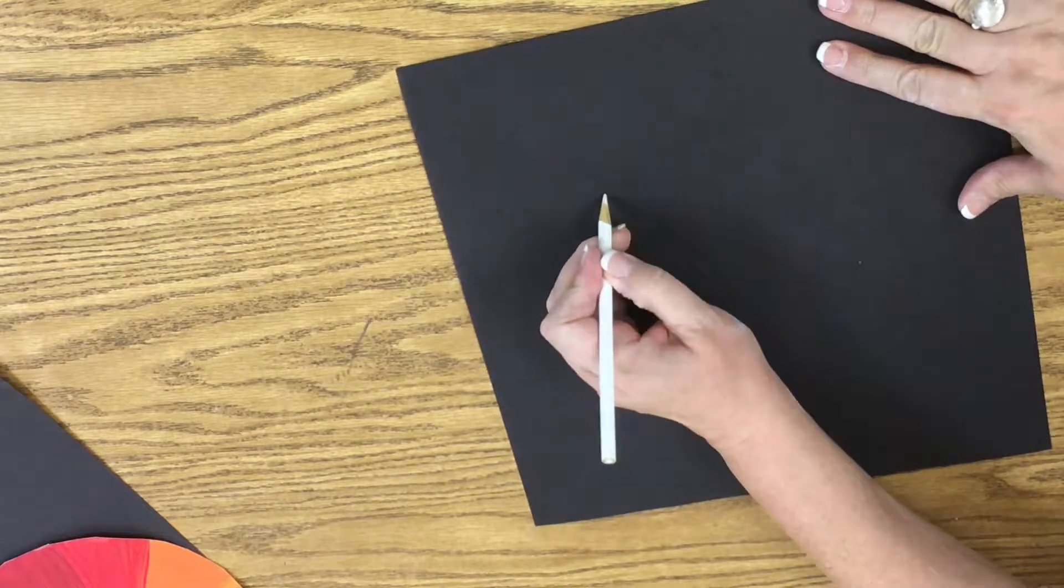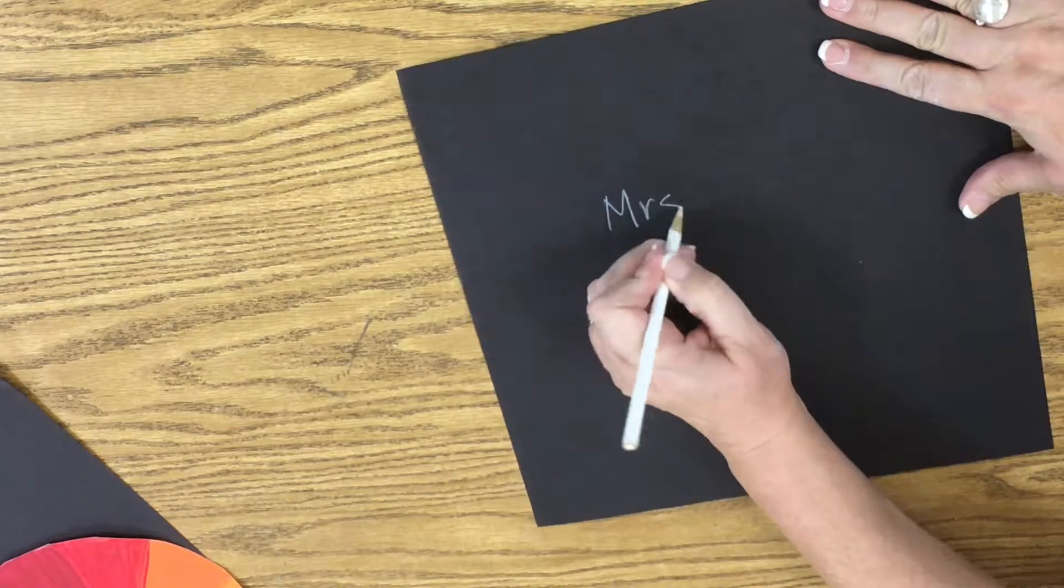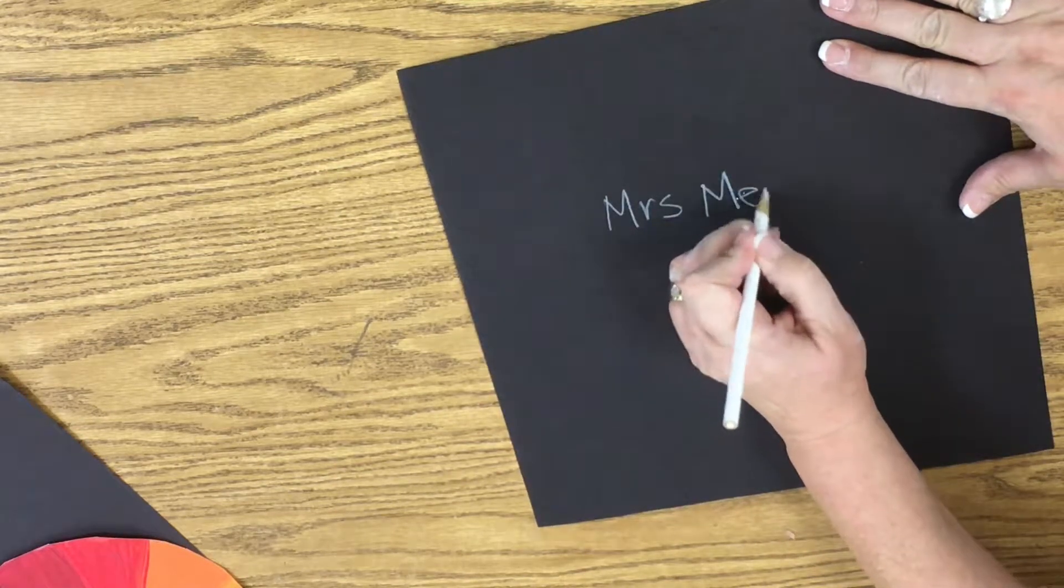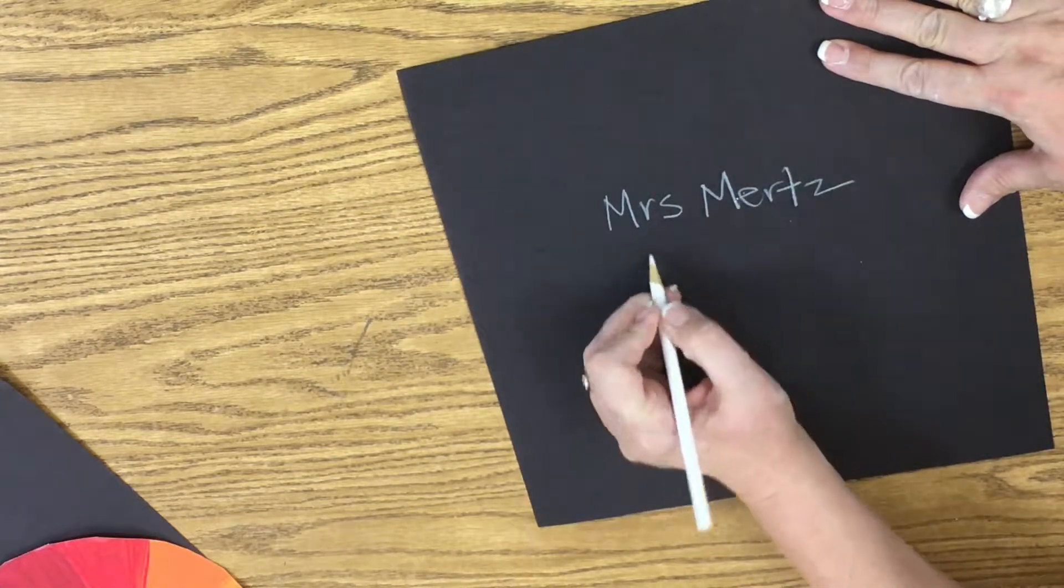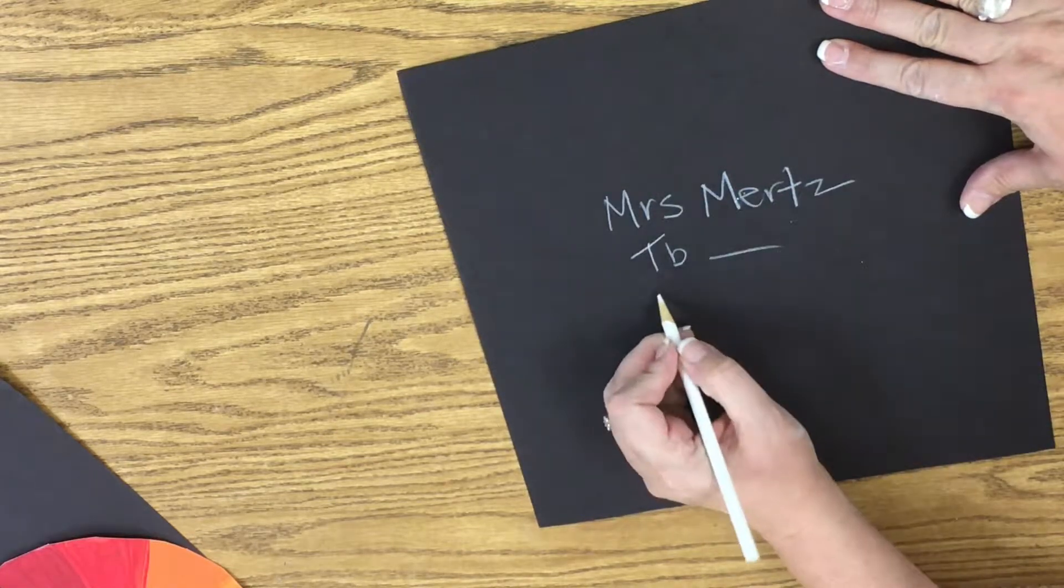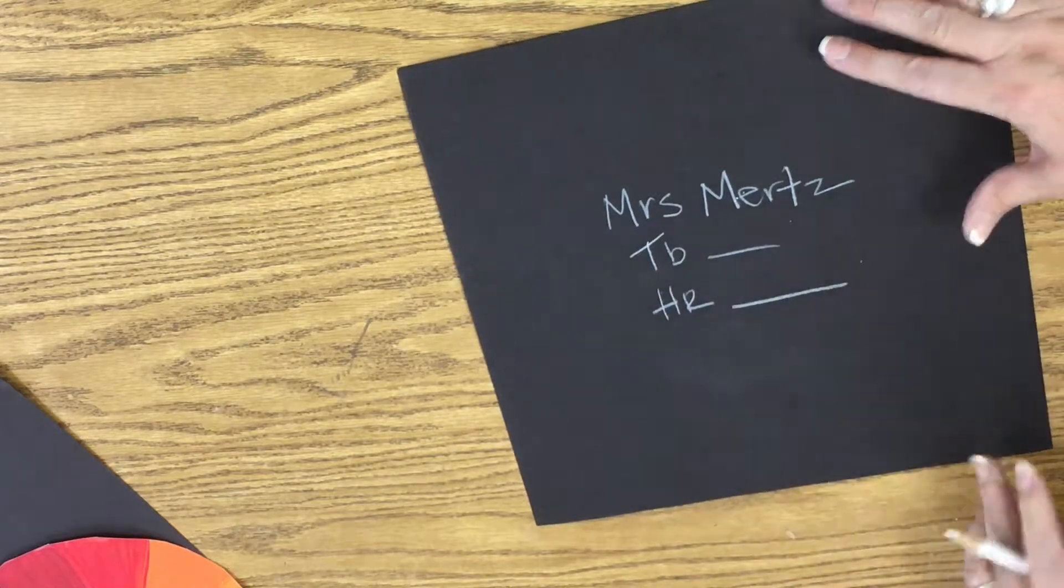We are going to write our first and last name on our paper, our table number, and our hour. Now we're just going to set this aside for a minute and go to our color wheel.